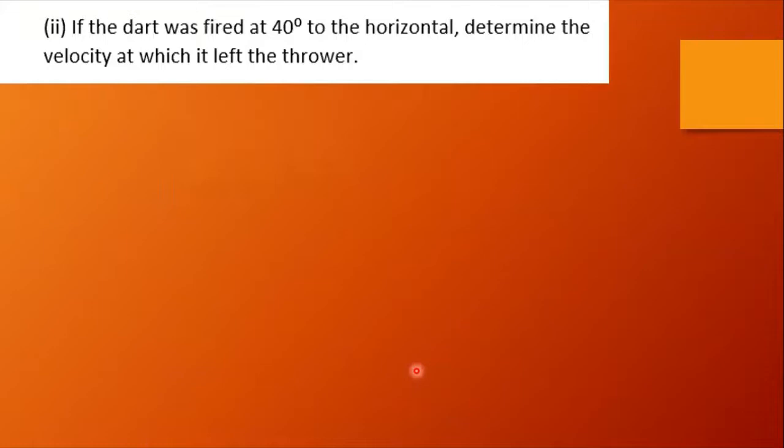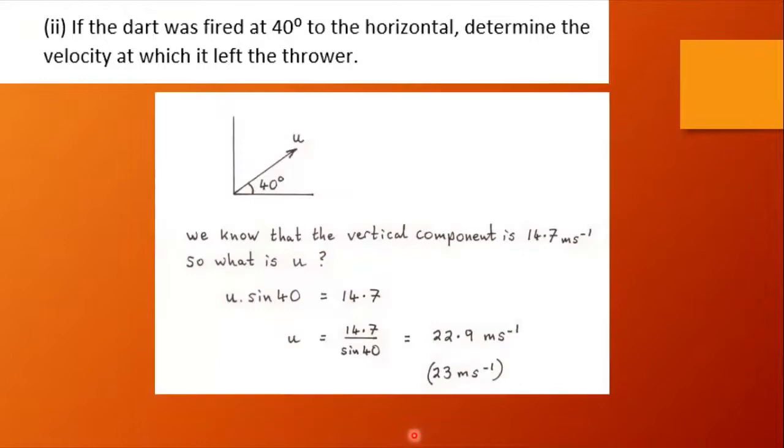If the dart was fired at 40 degrees to the horizontal, determine the velocity at which it left the thrower. Again, it's always helpful to draw little sketch diagrams in lots of physics problems. We know that the vertical component is 14.7, but what is u? Well u times sine 40, that's the vertical component, is 14.7. So then a little bit of mathematical jiggery pokery gives us u as 22.9, 23 meters per second.